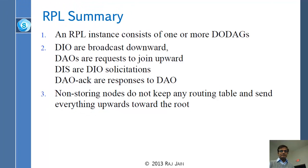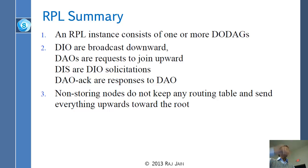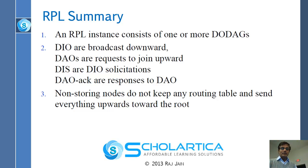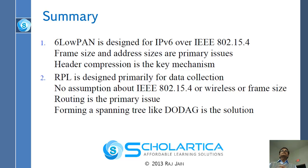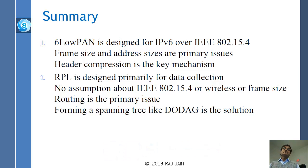That brings us to the end of RPL. RPL is the routing protocol, similar to OSPF, used for simple IoT devices. It forms a kind of spanning tree, and everything flows to the root so nodes don't need to remember routing tables. This concludes the module, which covered two different protocols: 6LoWPAN and RPL — they are not competing; they are different. RPL is the routing protocol for finding routes; 6LoWPAN is a compression and adaptation protocol for making packets smaller.